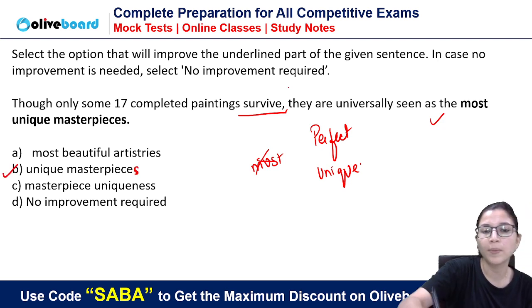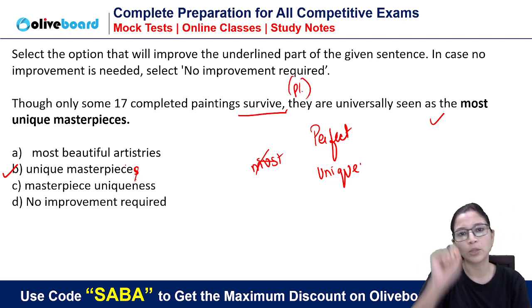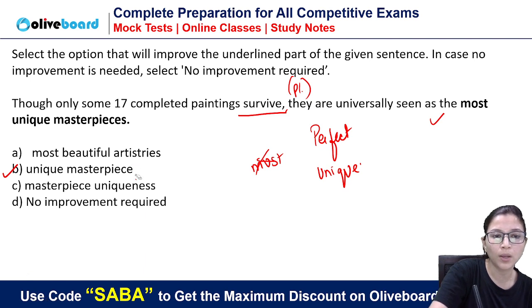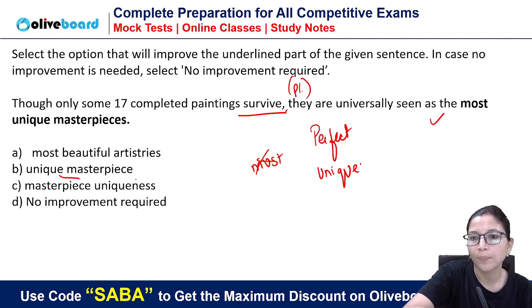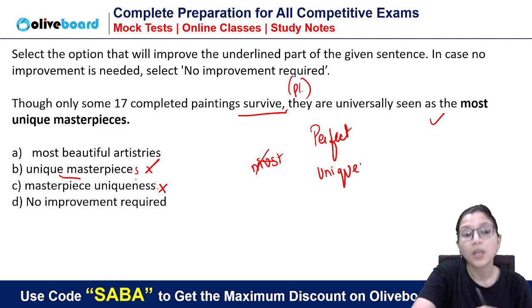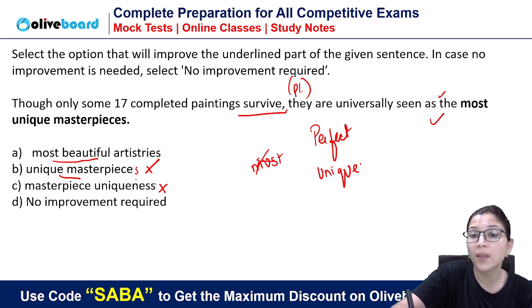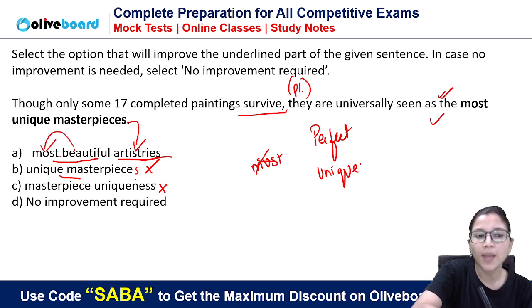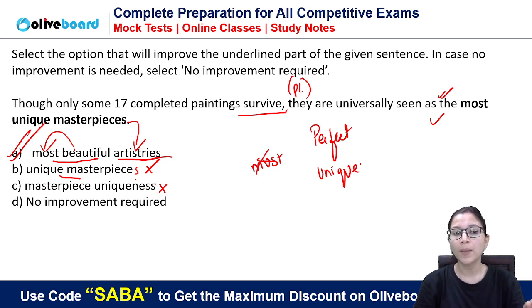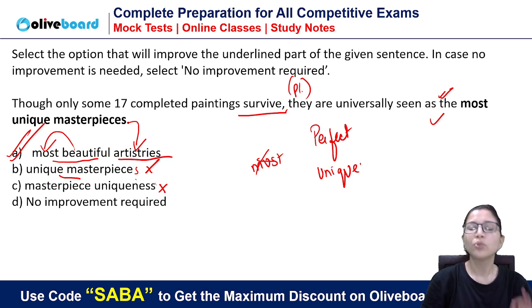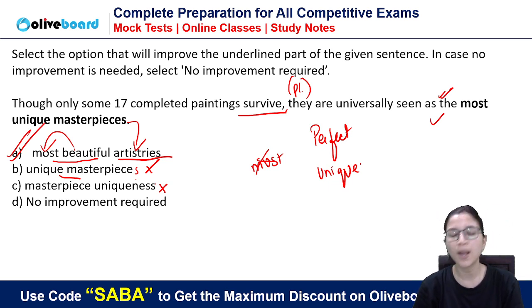Here, 'masterpieces' must be plural because 'they are' is plural — it is talking about 17. You can eliminate options on this basis. 'Masterpieces uniqueness' will not make sense. The answer is Option A: 'most beautiful artistries' — artistries meaning masterpieces. Sometimes options are very close, but since 'unique masterpieces' was not given as an option, the correct answer is A.